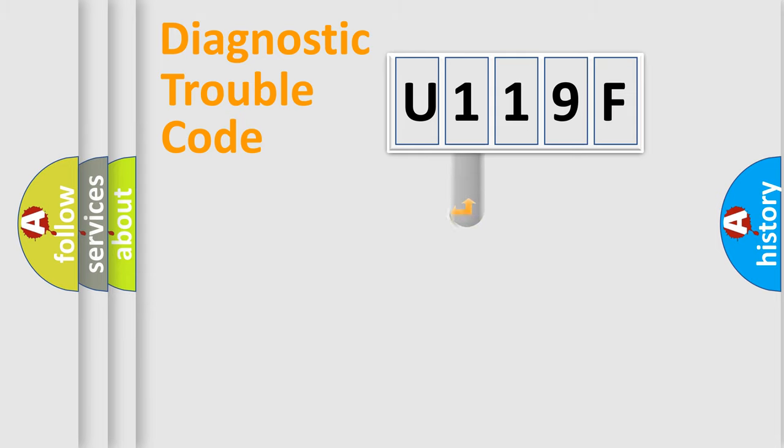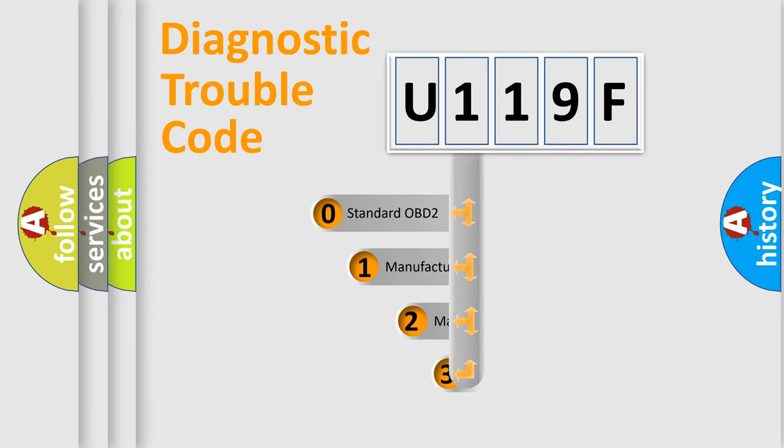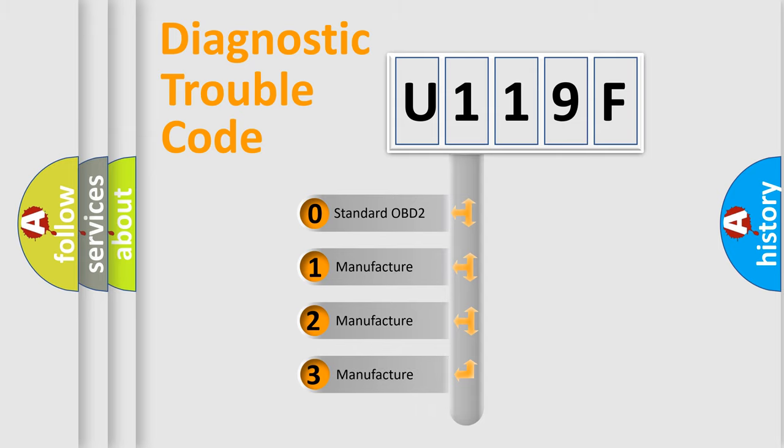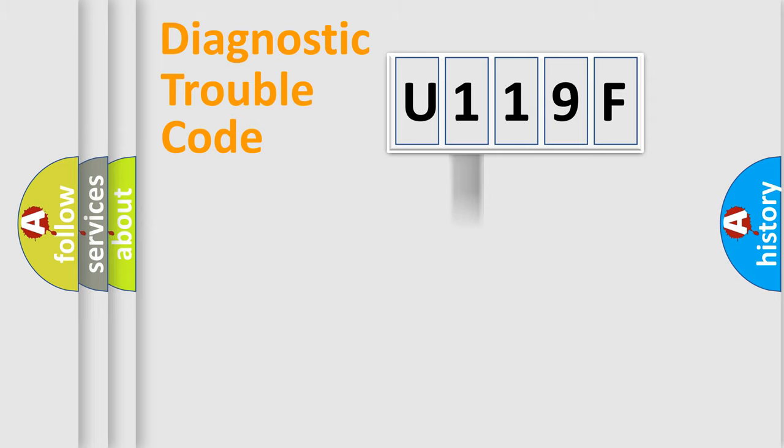This distribution is defined in the first character code. If the second character is expressed as zero, it is a standardized error. In the case of numbers 1, 2, or 3, it is a more prestigious expression of the car-specific error.